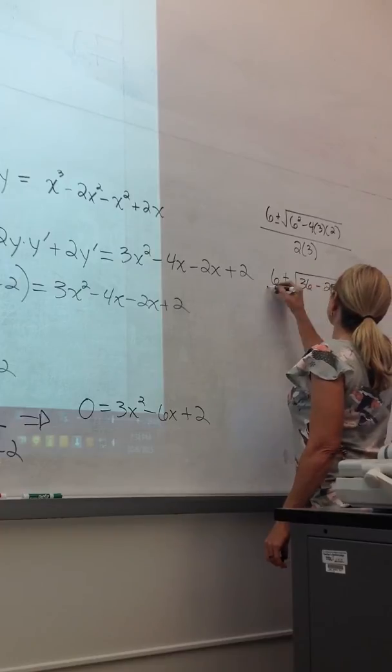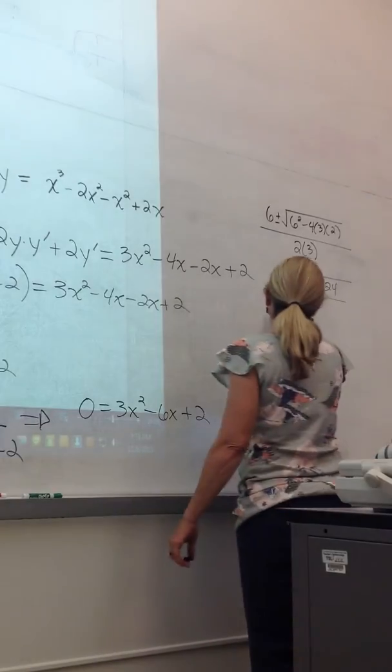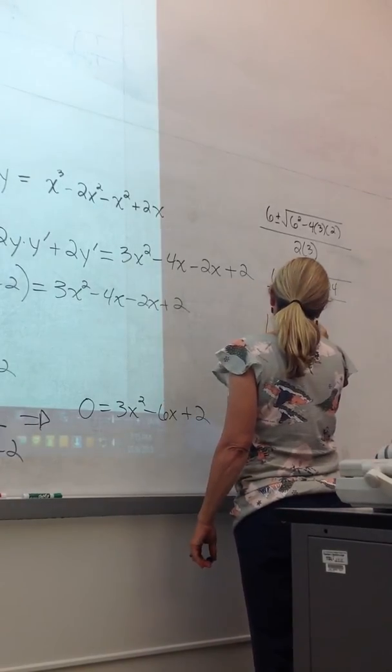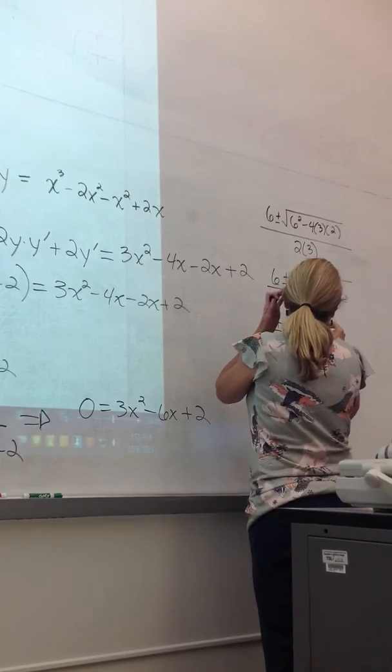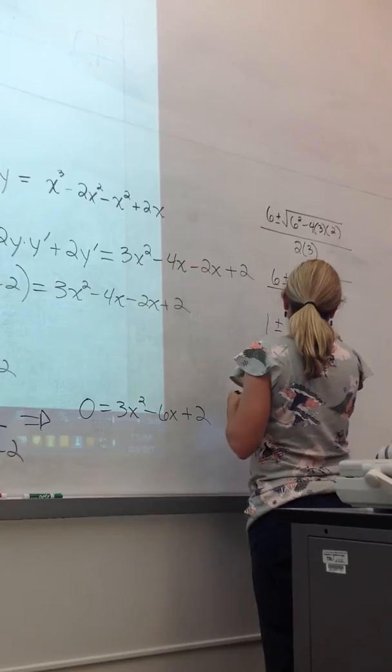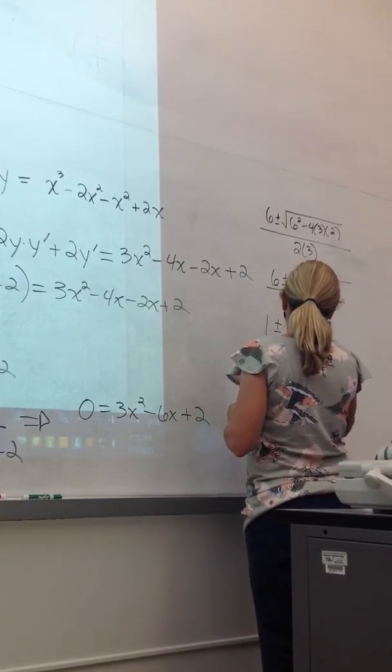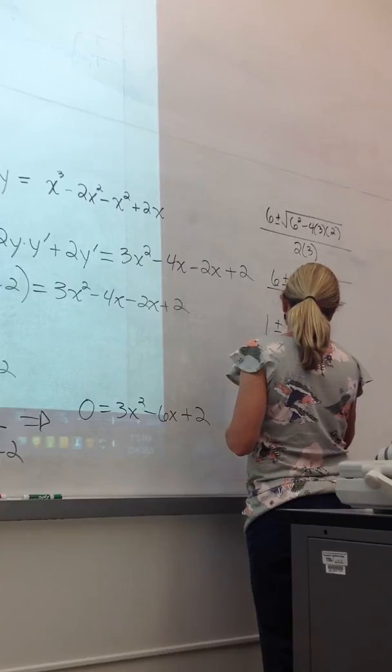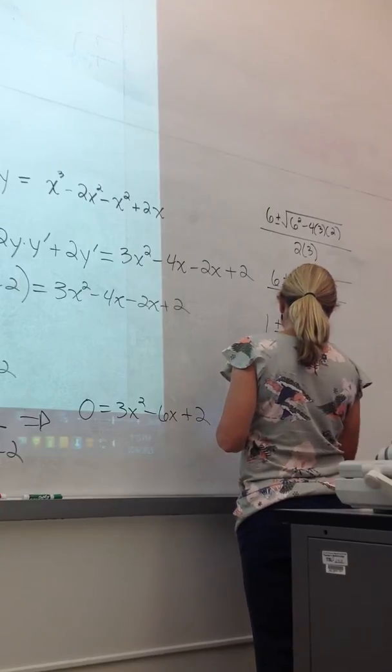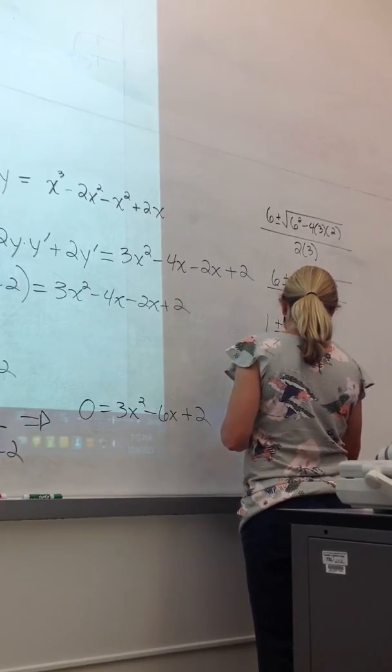So minus b plus or minus b squared minus 4 times a times c divided by 2a. That's the square root of 12. This is 2, not this square root. 6, which is 4.